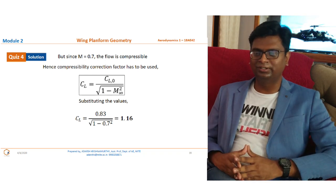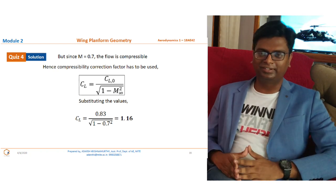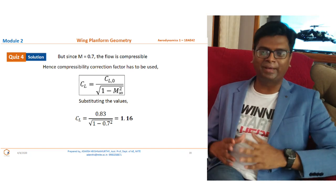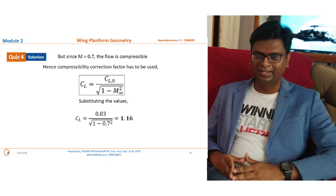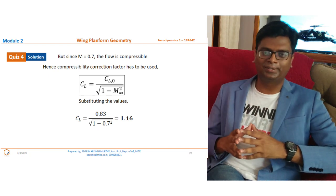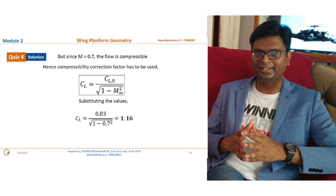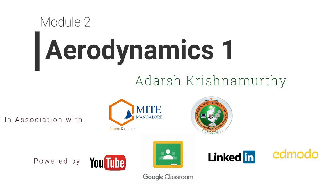Applying the Prandtl-Glauert rule: Cl = Cl₀ / √(1 − M∞²) = 0.83 / √(1 − 0.7²). Substituting both values, the coefficient of lift at Mach 0.7 comes out to 1.16. This confirms our earlier analysis that the lift coefficient increases with increasing Mach number.